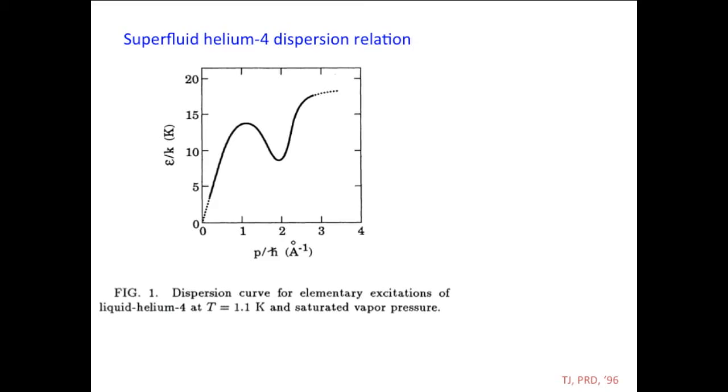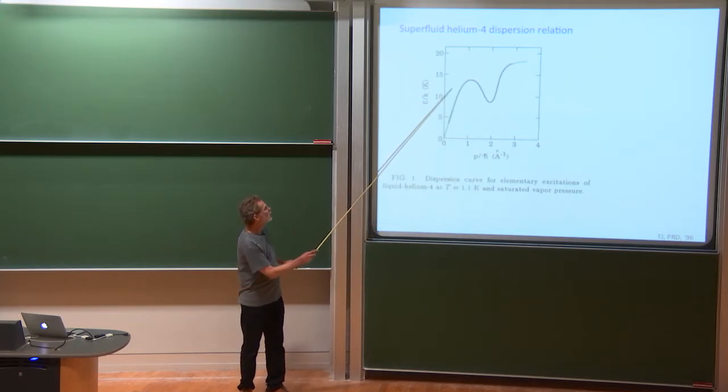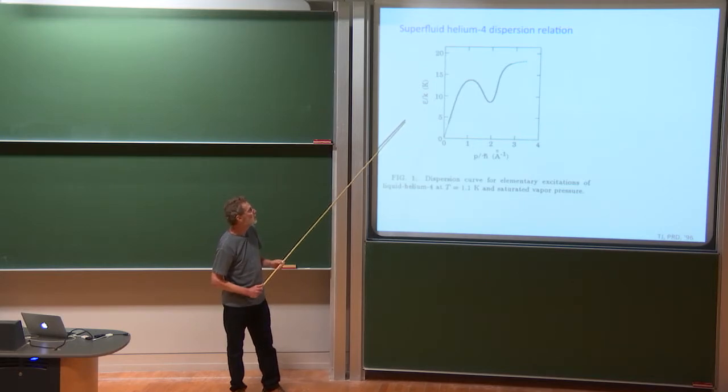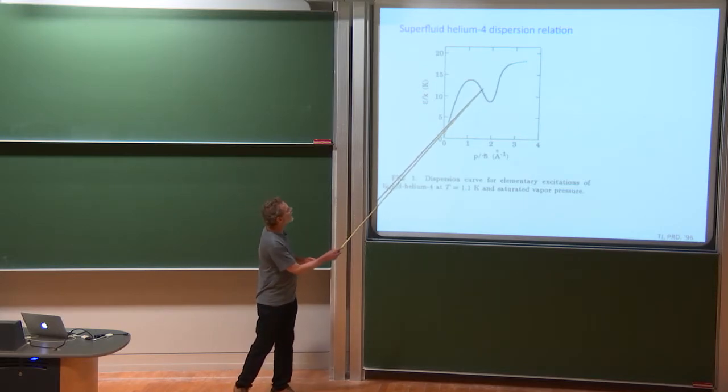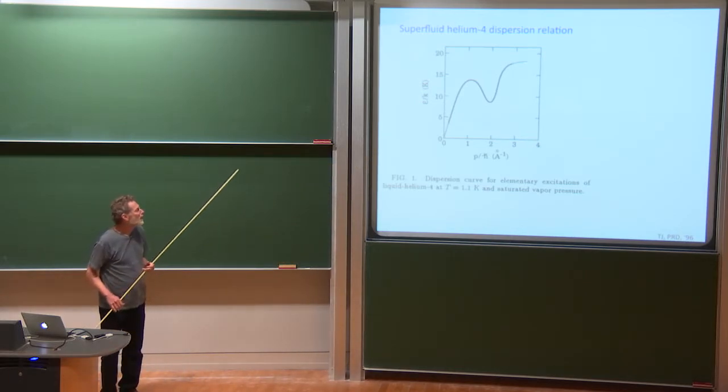But once the wavelength starts to approach Angstrom scale, which is the separation scale of the atoms, the group velocity drops over, and eventually it does this funny wiggle associated with what's called the roton minimum. And eventually, at high enough wave number, there just are no stable excitations or quasi-particles.